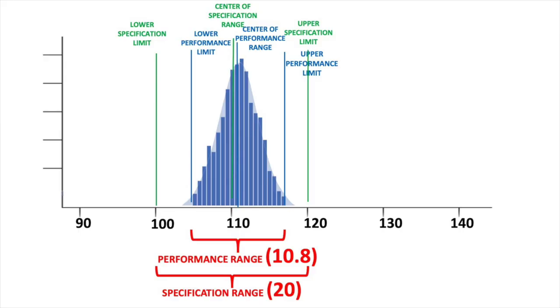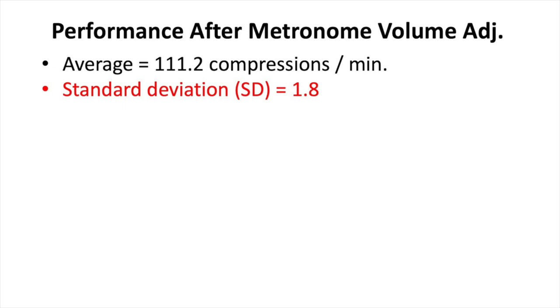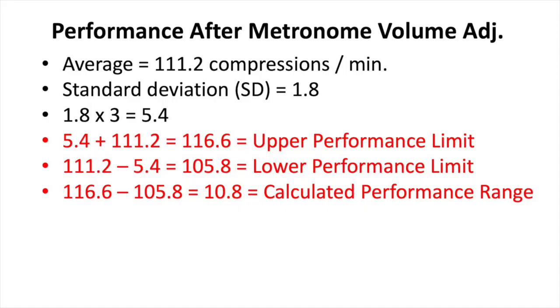They made another change to include turning up the smartphone speaker volume to maximum and made sure it was added to the checklist. After a while, they pulled another 100 cases — all from after the point when the process change was implemented. The new performance average for the compression rate was 111.2, even closer to the target of 110. The standard deviation also improved — recall it started at 9.0, came down to 5.1, then to 2.9, and is now at 1.8. The newest upper performance limit was 116.6 and the lower was 105.3, giving a calculated performance range of only 10.8 — way less than the specification range of 20.